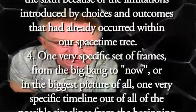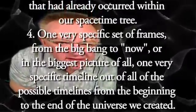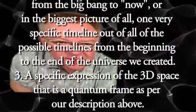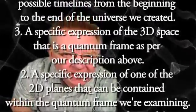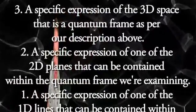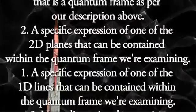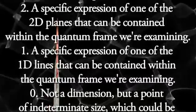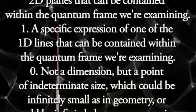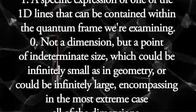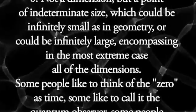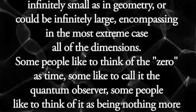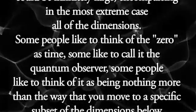Four would be one very specific set of frames, from the Big Bang to now — or in the biggest picture of all, one very specific timeline out of all the possible timelines from the beginning to the end of the universe we created. Three is a specific expression of the 3D space that is a quantum frame. Two, a specific expression of one of the 2D planes that can be contained within the quantum frame we're examining. And one, a specific expression of one of the 1D lines that can be contained within that quantum frame. Zero — not a dimension, but a point of indeterminate size, which could be infinitely small as in geometry, or could be infinitely large, encompassing in the most extreme case all the dimensions.